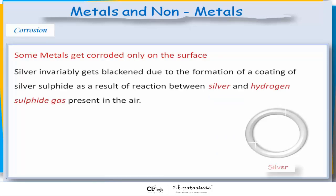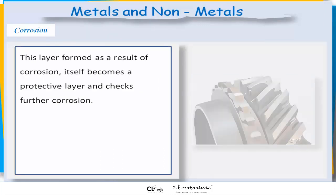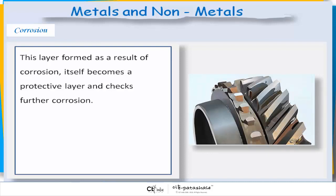Some metals get corroded only on the surface. Silver invariably gets blackened due to the formation of a coating of silver sulphide, as a result of the reaction between silver and hydrogen sulphide gas present in the air. This layer formed as a result of corrosion itself becomes a protective layer and checks further corrosion.